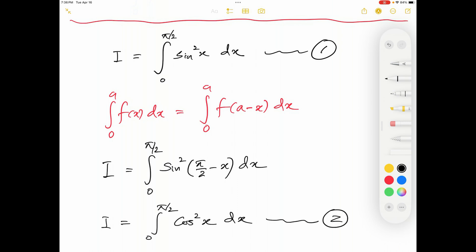I'm going to label this as equation number 2. Now I have the given integral i being equal to 0 to pi over 2 sine squared x dx and the other integration I have is that same i is equal to 0 to pi over 2 integral cosine squared x dx. What I'm going to do next is I'm going to add those given integrals.